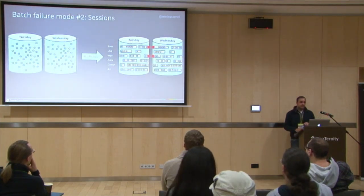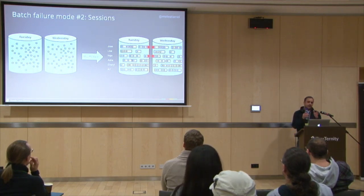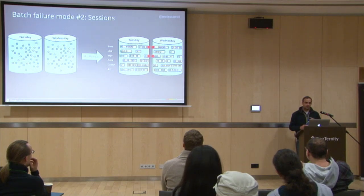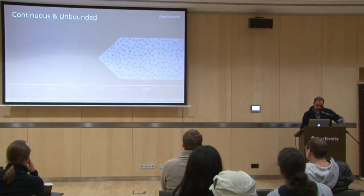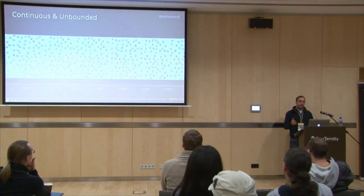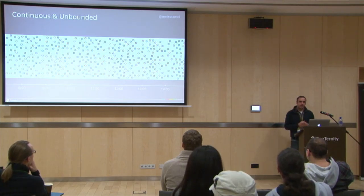The second problem with batch processing is sessions. At Google, we have users and sessions, and sessions are really important. But when you need to break your data into days like Tuesday and Wednesday, those sessions or users are also broken, making things more complicated. The data is basically continuous and unbounded, and we need to find a way to deal with this continuous and unbounded data. Batch processing does not seem to help with that.